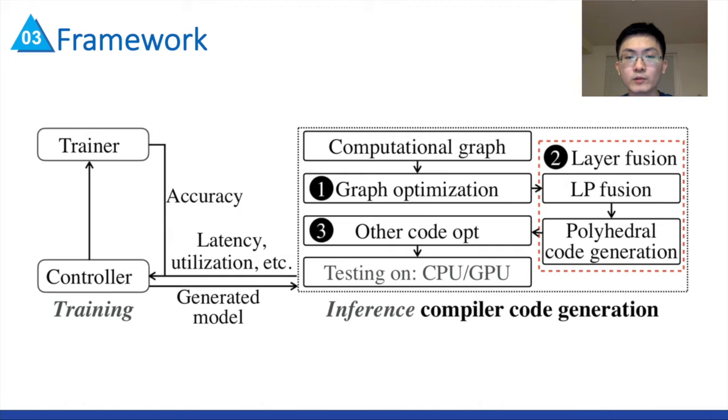Our framework contains two processes, training and compiler code generation. The training process includes a controller and a trainer. The controller predicts and generates the model hyperparameters, such as network architecture. The trainer trains the predicted model and evaluates its accuracy by fine-tuning the model to downstream tasks.